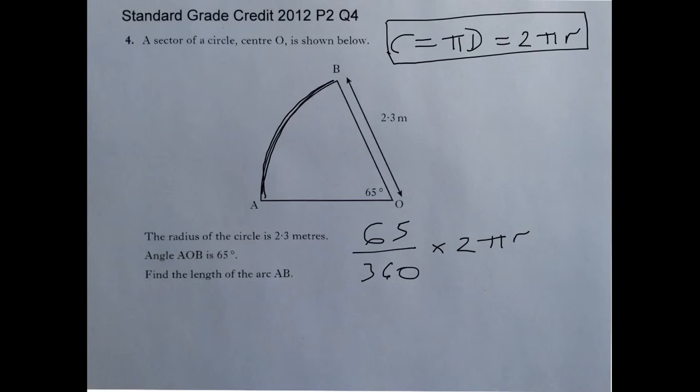So let's substitute the value for R. So we get 65 divided by 360 times 2 times pi, and the radius is 2.3. To work that out we get an answer of 2.609. And that's metres.